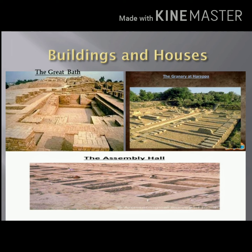Now we will discuss about the Great Public Path. The Great Public Path was at Mohenjo-daro. It was used on religious occasions and festivals. The Assembly Hall was another huge public building at Mohenjo-daro. It was used for general meetings by the ruler.